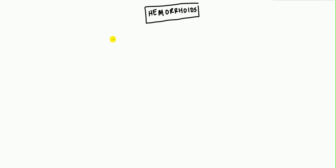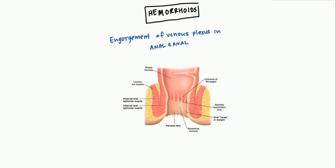The definition of hemorrhoids is engorgement of the venous plexus in the anal canal. The best way to start is with the anatomy of the anal canal. I have a diagram here of the anal canal, and the most important part is this line that I'm drawing here, called the dentate or also known as the pectinate line.